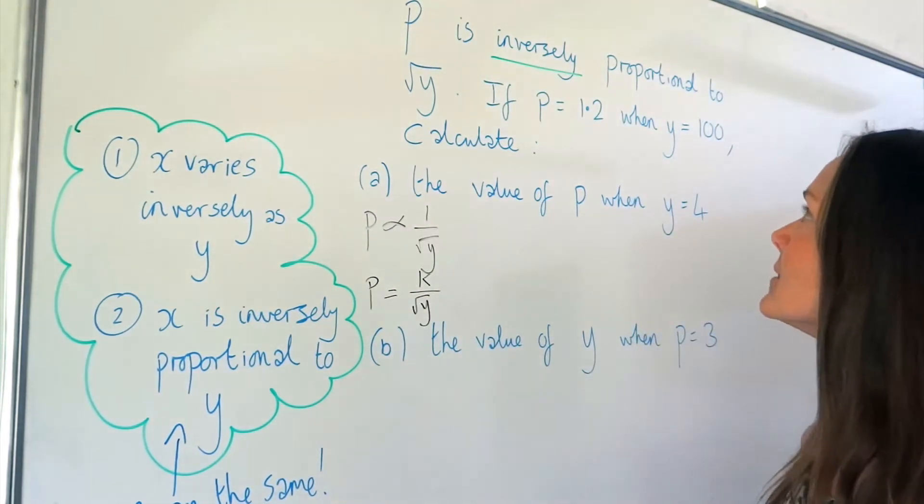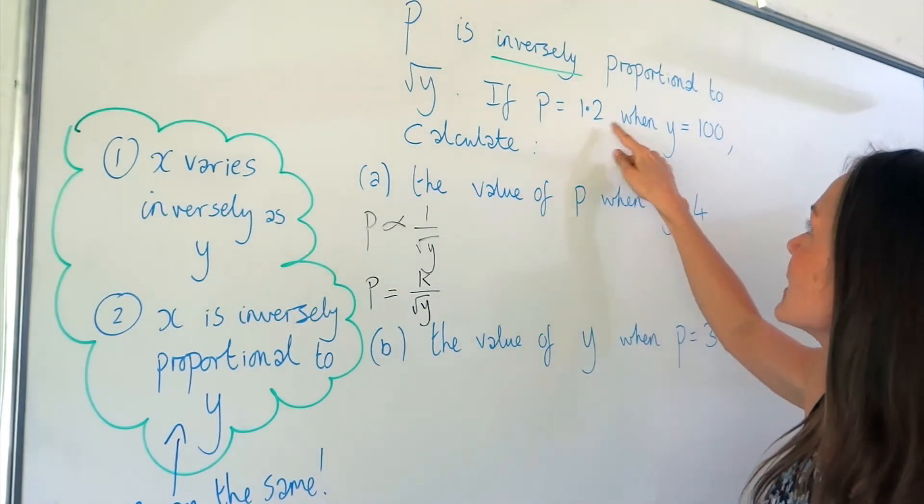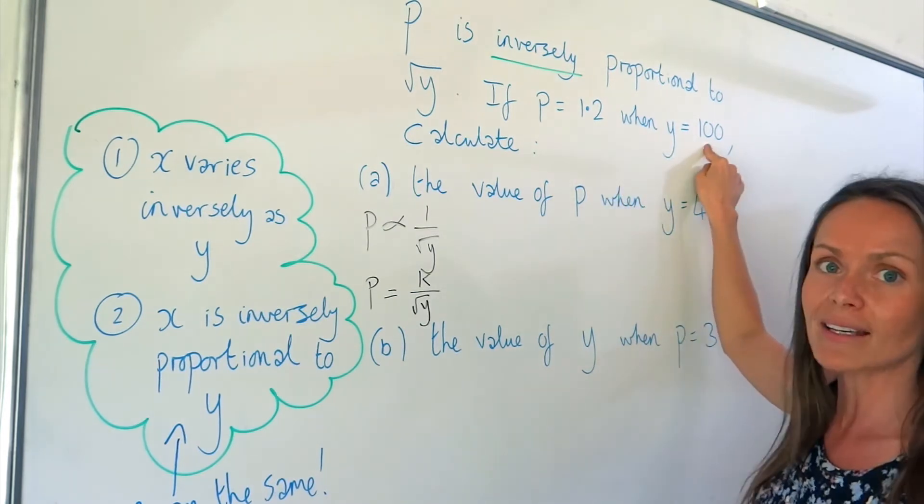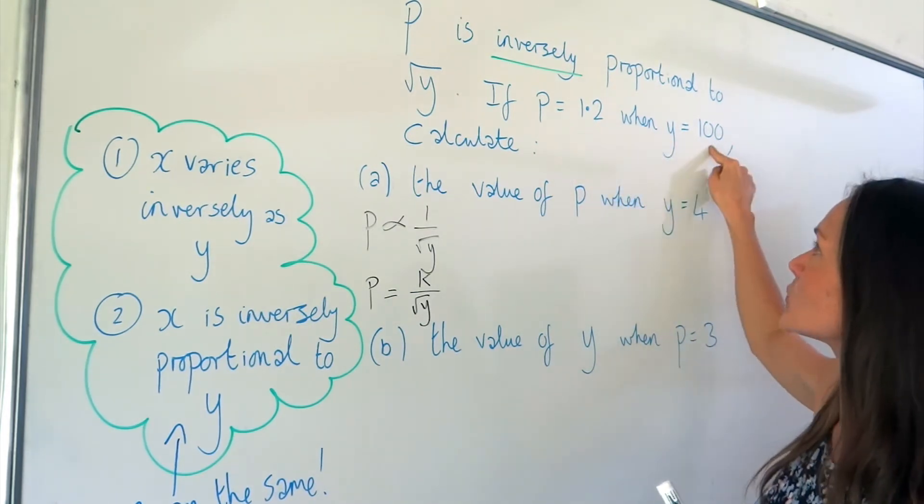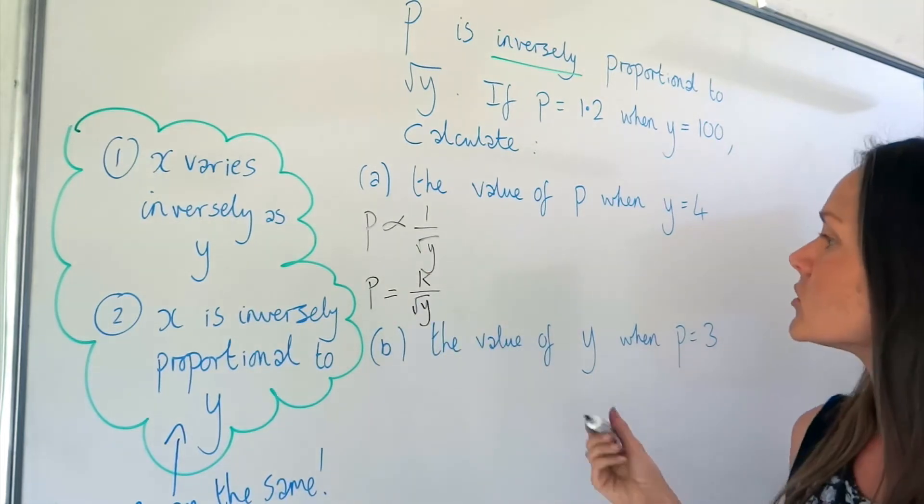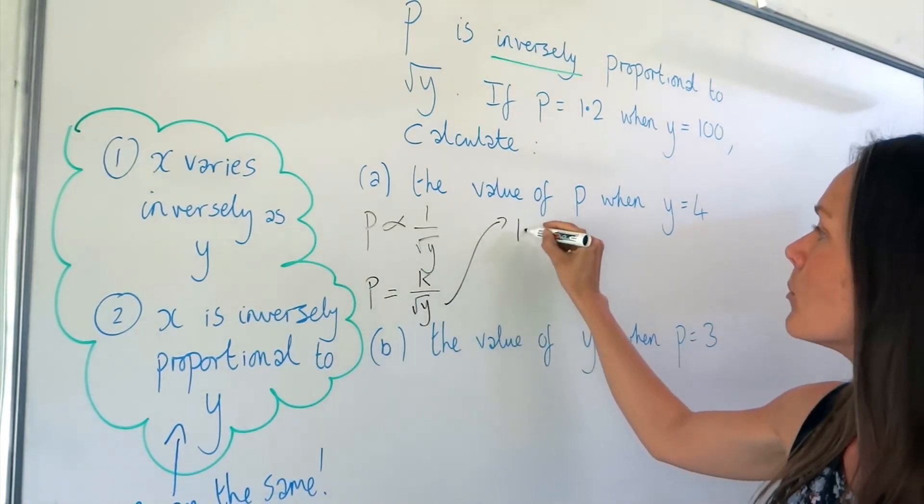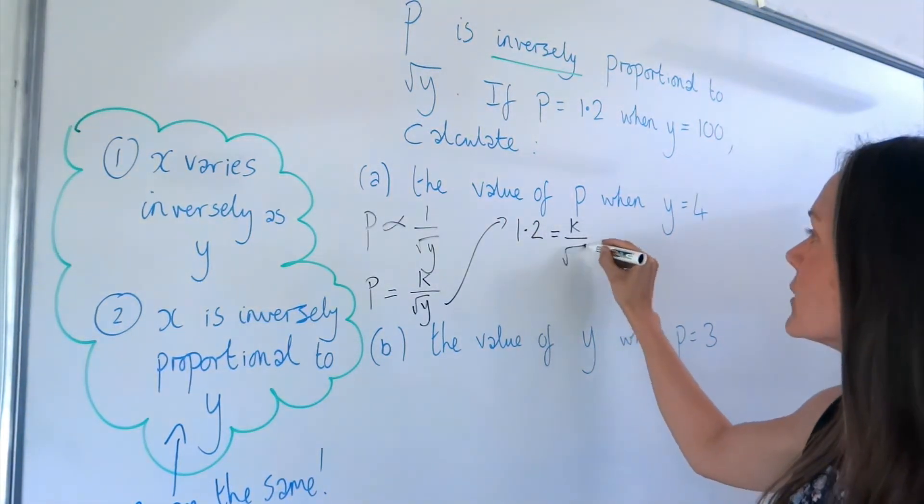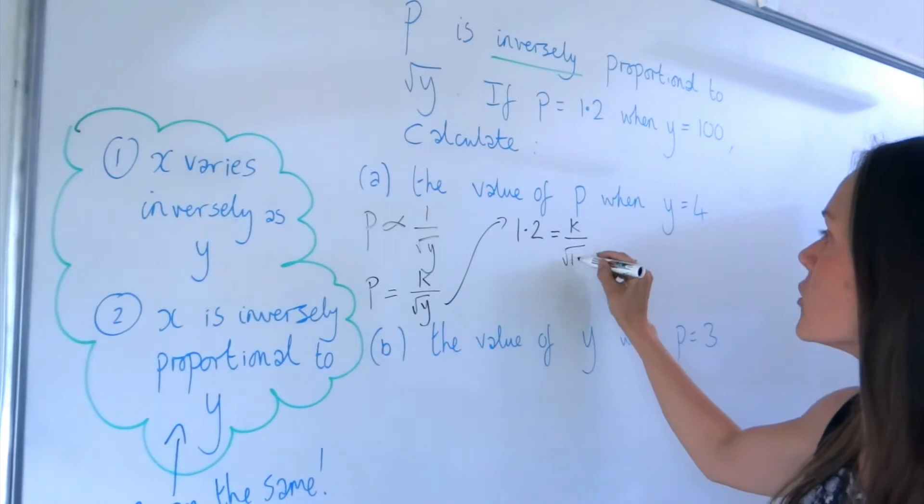I need to substitute in the information given at the beginning of the question. So we know that when P is 1.2, Y is 100. So I need to substitute those two values into this equation. So I'm going to change P to 1.2. And I'm going to change that Y value, not forgetting my square root, to 100.